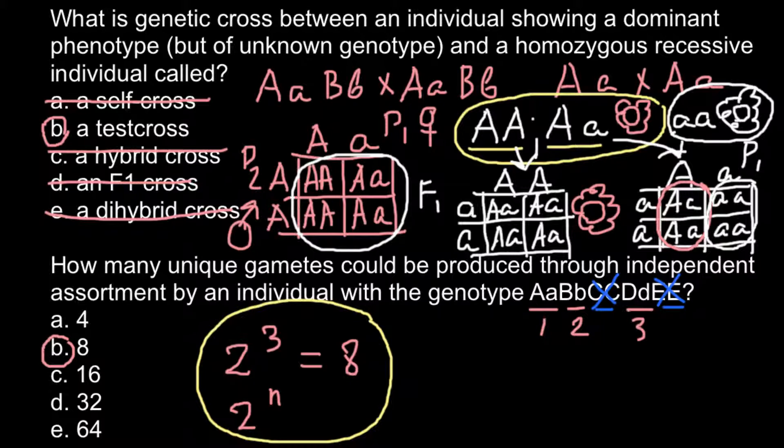So the correct answer is B — eight different combinations of gametes can be produced by this particular genotype. That is all for today. Thank you for your attention. Please subscribe for my new videos, which I post almost every day. Thumbs up if you like this video, please write your comments, and see you in the next video. Goodbye!